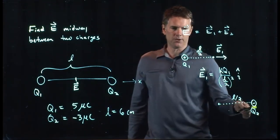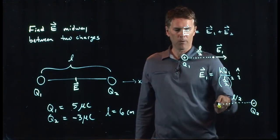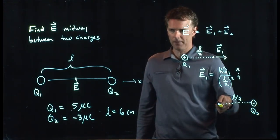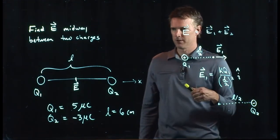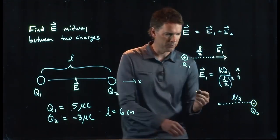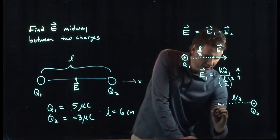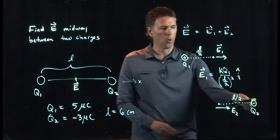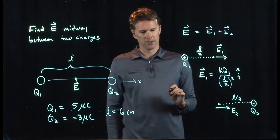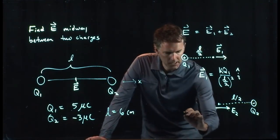If that's a negative charge, what direction is the E field at this point? Is it away from the charge or towards the charge? Towards the charge, right? Negative charges are sinks. So E2 is pointing towards the negative charge. And now we know exactly what E2 is.